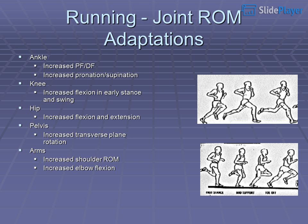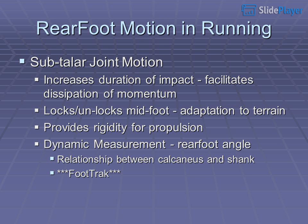Kinematic changes that appear in running: at the ankle, increased plantarflexion and dorsiflexion and increased pronation and supination; at the knee, increased flexion in early stance and swing; at the hip, increased flexion and extension; at the pelvis, increased transverse plane rotation; and at the arms, increased shoulder movement and increased elbow flexion.